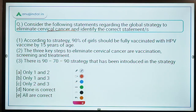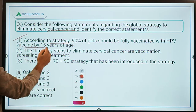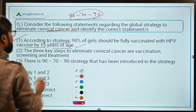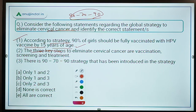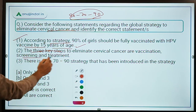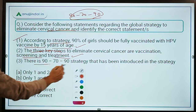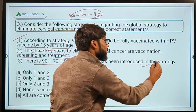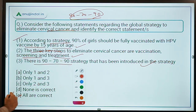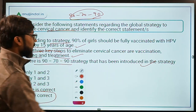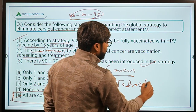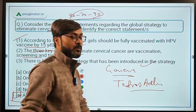Identifying the correct statements: 90% of girls should be fully vaccinated with the HPV vaccine by 15 years of age — correct, per the 90-70-90 strategy. The three key steps to eliminate cervical cancer are vaccination, screening, and treatment — also correct. The 90-70-90 strategy is introduced in this WHO strategy — correct. Therefore all statements are correct. The WHO is headquartered in Geneva, headed by Tedros Adhanom, and Soumya Swaminathan is the Chief Scientist at WHO from India.